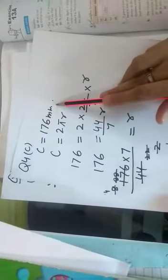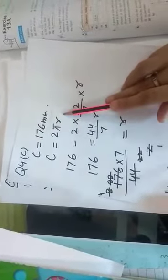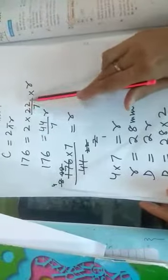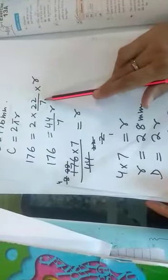Now come to the C part. B part you will do it by yourself because it is very simple and easy. In C part you are given the circumference which is 176 mm. And then you will use a formula of circumference and find out the result by this calculation.